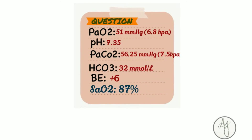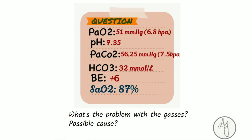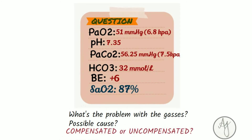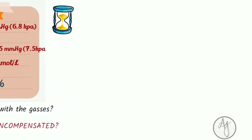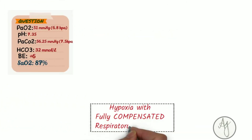Going to question number two — same questions: what is the problem with the gases, what's the possible cause, and you have to figure out if it's compensated or uncompensated. This case is hypoxia with fully compensated respiratory acidosis.